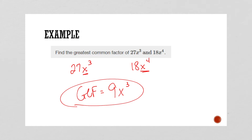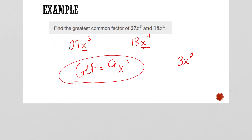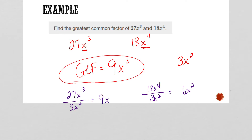Let me show you something. What if we had said that 3x² was our GCF? If you divide 18x⁴ by 3x², you end up with 6x². If you divide 27x³ by the same number, you end up with 9x. Look what's left over — 9 and 6 have a 3 in common. So whenever your leftover terms still have a common factor, that means you did not pull out the GCF.